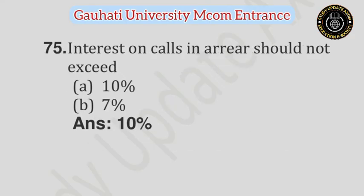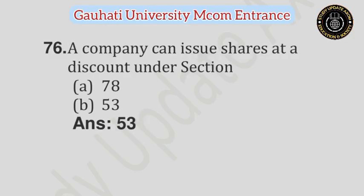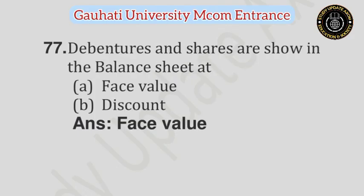Question number 75: Interest on calls in arrears should not exceed — Option A: 10%, Option B: 7%. Answer is 10%. Question number 76: A company can issue shares at a discount under section — Option A: 78, Option B: 53. Answer is 53. Question number 77: Debentures and shares are shown in the balance sheet at — Option A: Face value, Option B: Discount value. Answer is Face value.